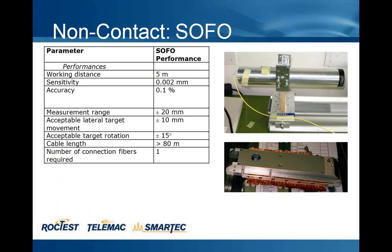When more accuracy is needed we can use the SOFO technology. The working distance is limited to 5 meters, but sensitivity is down in the micrometer range — much higher accuracy than the laser distance meter. The measurement range is limited to a few centimeters, and the acceptable lateral movement and rotation is a little smaller. I will show in the application section how this technology was used at CERN.